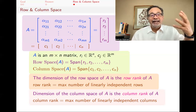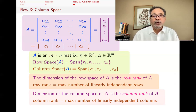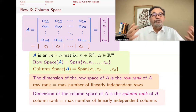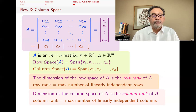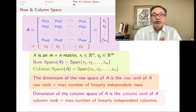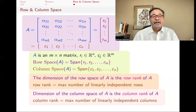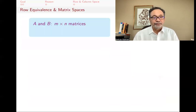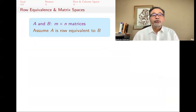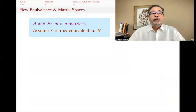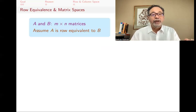This was background — subjects covered in previous videos on vector spaces, dimension, span, subspaces, row space, and column space. Now, if A and B are m by n matrices that are row equivalent — meaning you can get from one to the other by elementary row operations — let's see what happens to the row and column spaces.